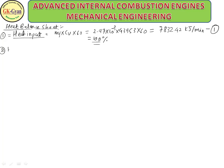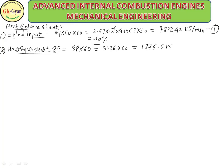Second, heat equivalent to BP = BP × 60 = 31.259 × 60 = 1875.6 kJ/min. Percentage = 1875.6 / 7832.42 = 23.94%.